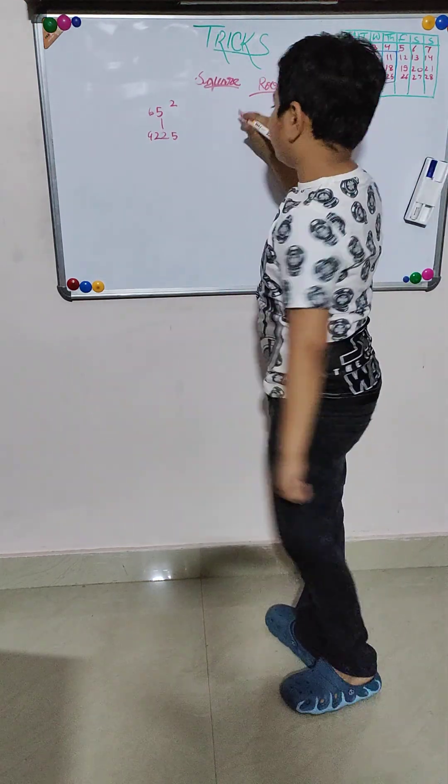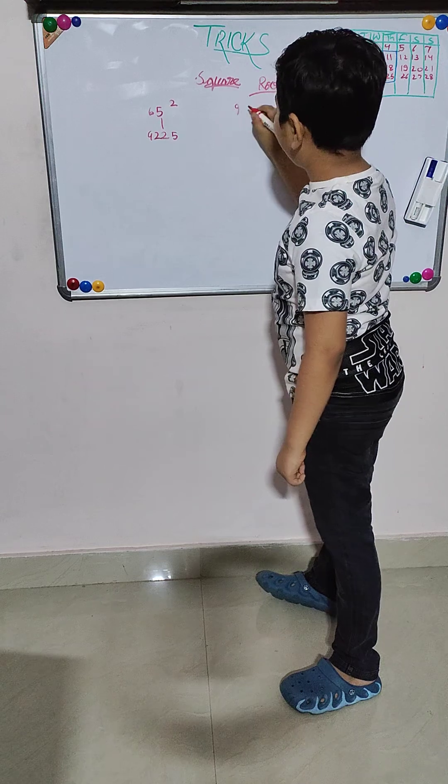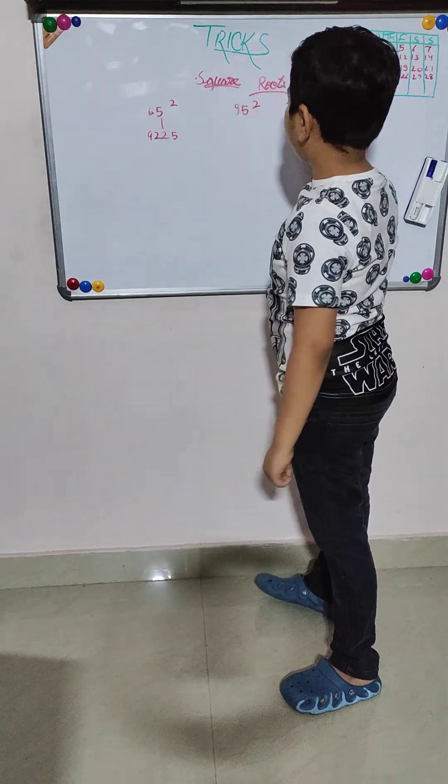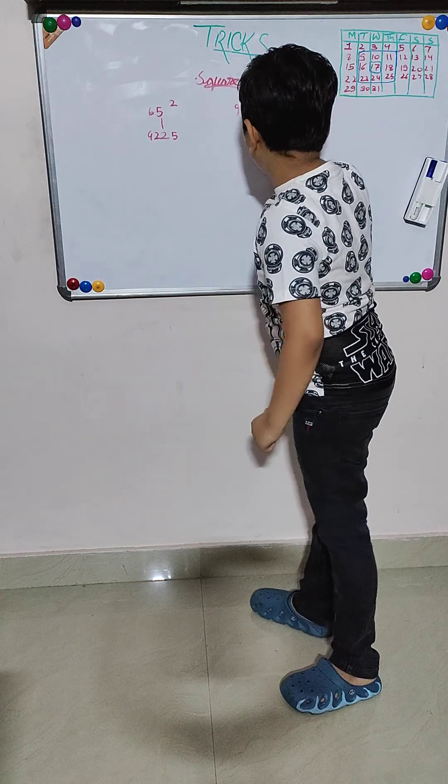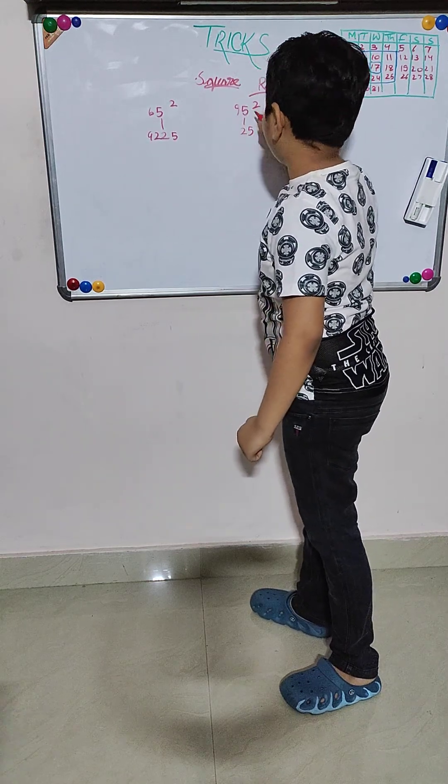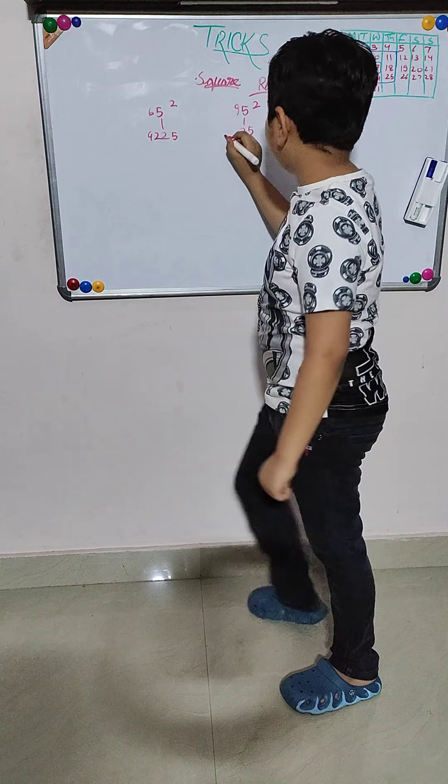One more. The square root of 95. First we will do the square of 5. The answer is 25. 9 into 10 equals 90.